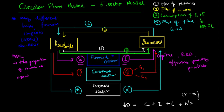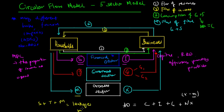We subtract imports because imports are leakages of purchasing power from the economy. Households supply resources to businesses and businesses pay incomes, but because households don't spend all their income in domestic businesses, that income is leaked from the economy in the form of imports — overseas producers benefit from us buying their goods and services. Savings plus tax plus imports — S plus T plus M — are considered leakages or withdrawals of purchasing power from the economy, meaning income is not injected back into businesses.